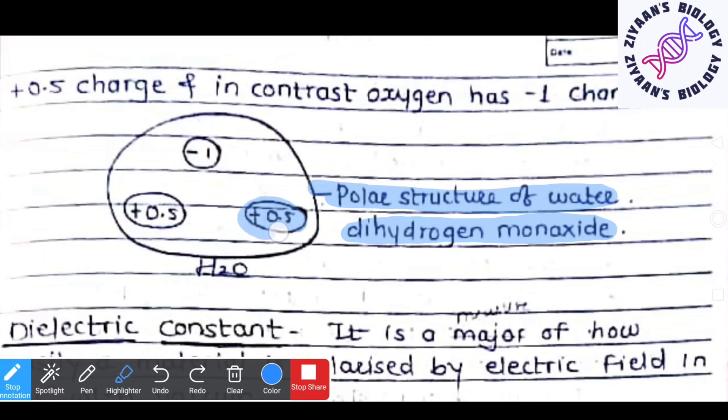One hydrogen atom has a +0.5 charge, the other hydrogen also has a +0.5 charge, and the single oxygen has a -1 charge.